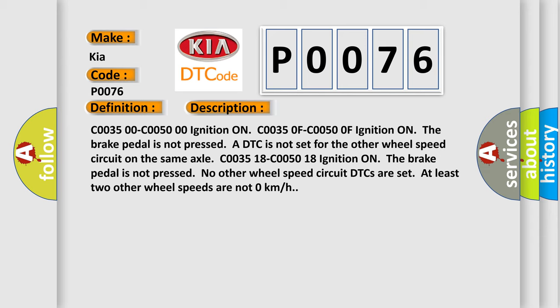C0035 00-C0050 00 ignition ON. C0035 0F-C0050 0F ignition ON. The brake pedal is not pressed. A DTC is not set for the other wheel speed circuit on the same axle.